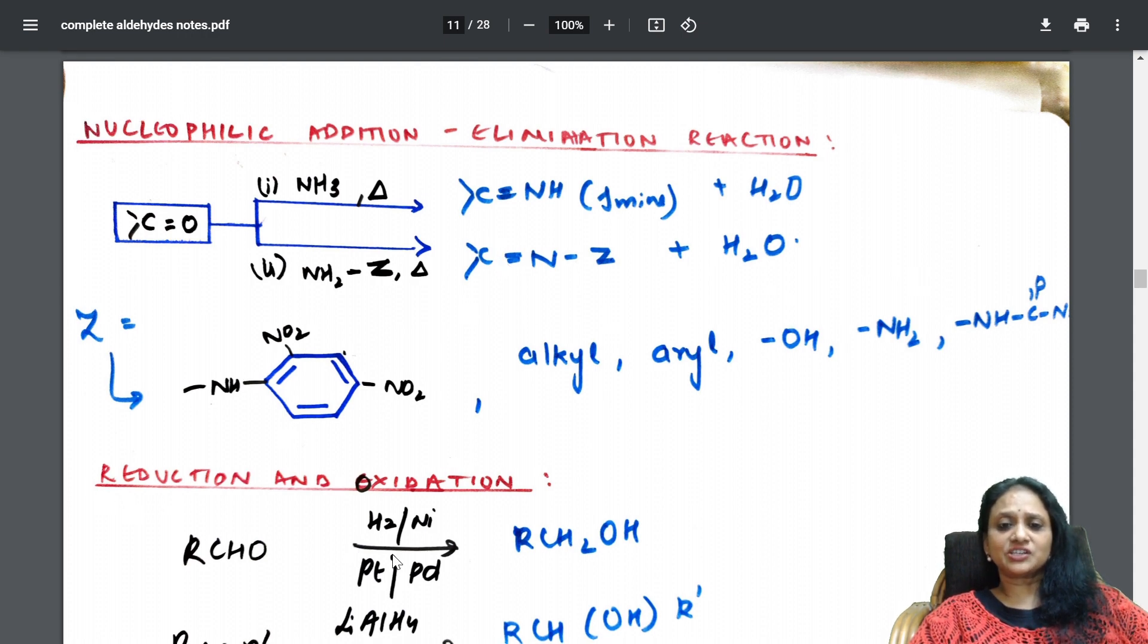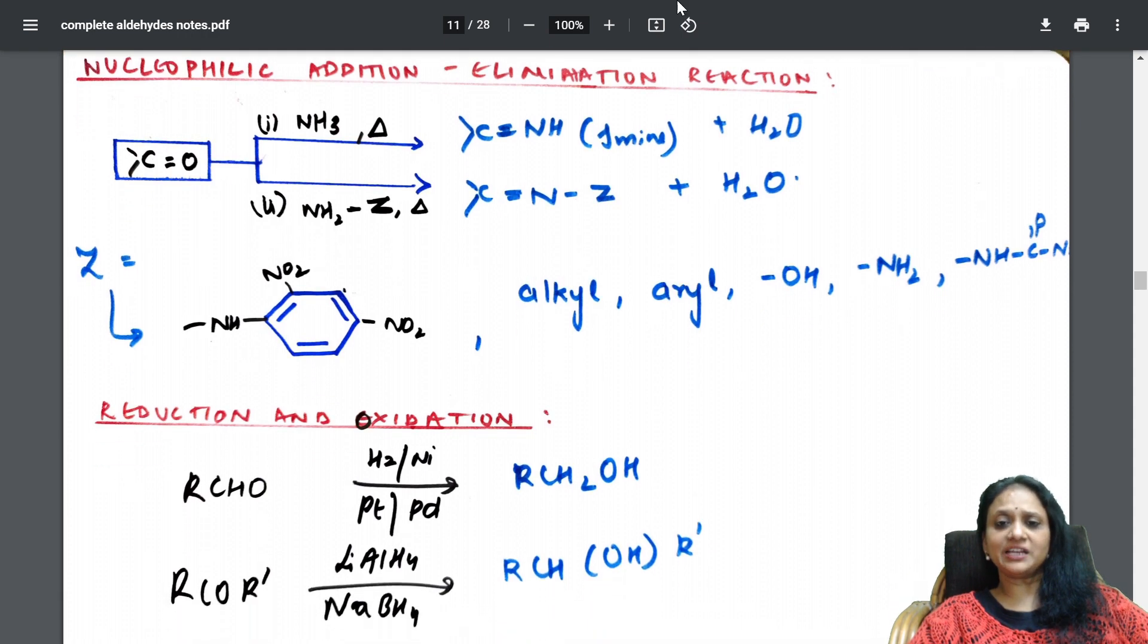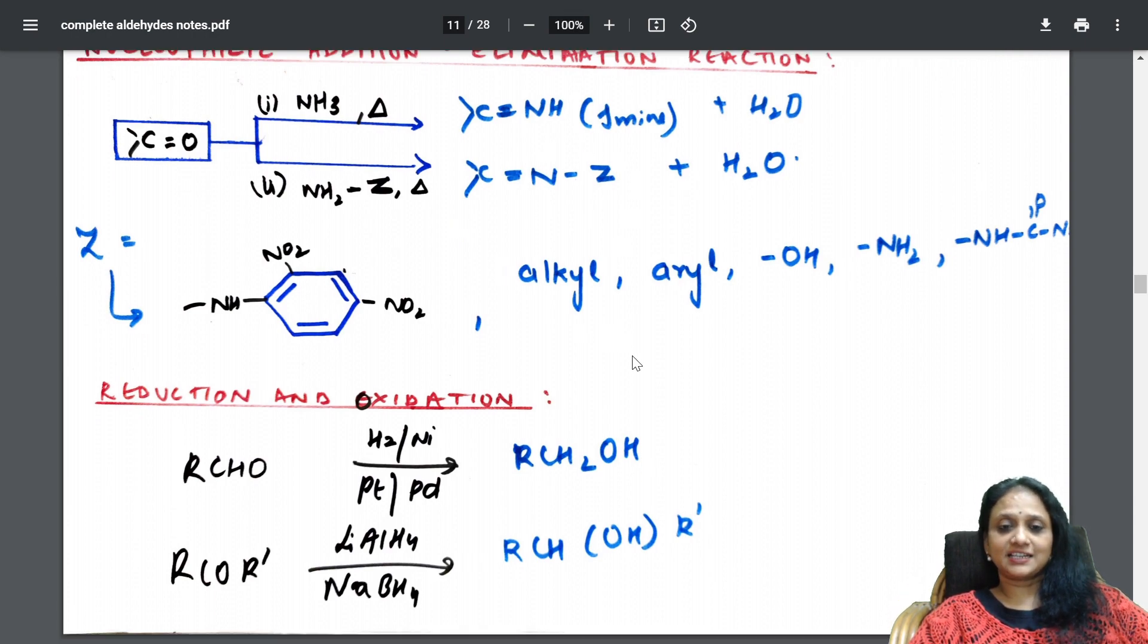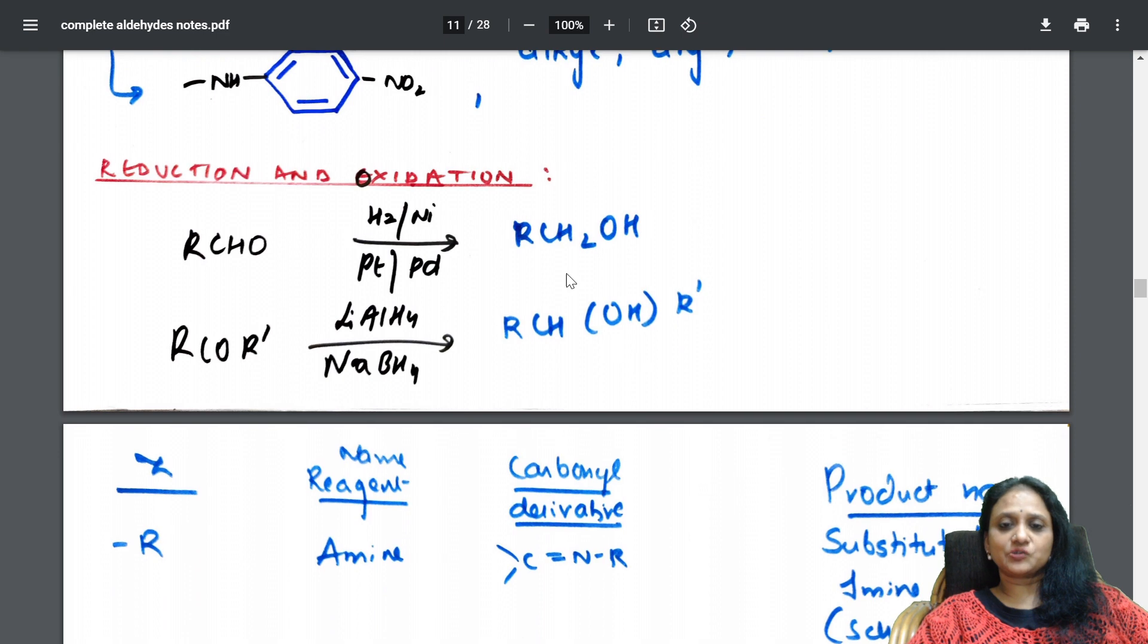So, taking into consideration, slowly, I have explained each and every reaction of this in a form of a table. Let's see that. Okay. Reduction, oxidation also I have mentioned. We very well know. So, aldehydes on reduction, in the presence of metal catalyst, give me primary alcohols. Ketones on reduction give secondary alcohols.